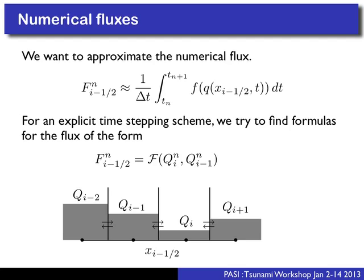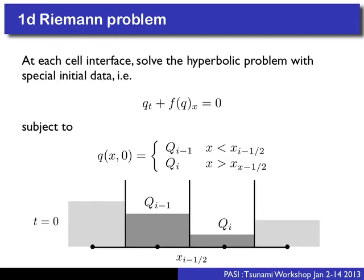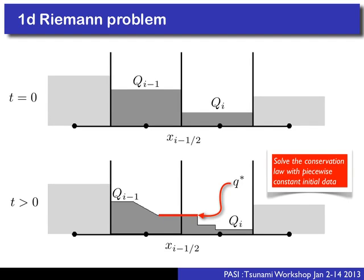This leads to the classic Riemann problem: start with our conservation law and ask, what happens if I start with piecewise constant data on the left and the right as initial data? You might think, why solve this analytically before solving it discretely? But that's exactly what we do. With this very special data, we can actually solve it analytically. We often come up with an approximate solver, but this is the basis for a wide variety of numerical methods.